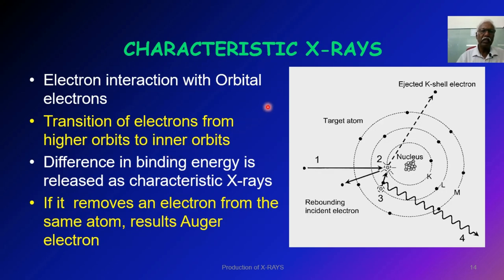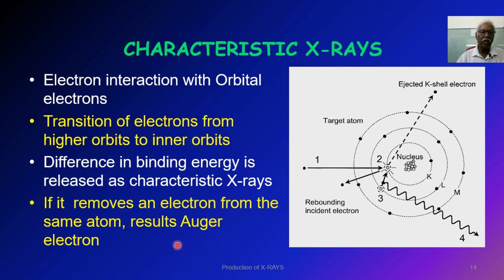Coming to characteristic X-rays, they are due to electron interaction with orbital electrons. The transition of an electron from a higher orbit to an inner orbit is the basis for characteristic X-rays. When an incoming electron interacts with and removes a K-shell electron, a vacancy arises. To fill the vacancy, an electron from a higher orbit transitions down, and the difference in binding energy is given out as characteristic X-rays. These characteristic X-rays can then interact with the same atom and remove another electron — that is called an Auger electron. So characteristic X-rays always have the possibility of producing an Auger electron from the same atom.